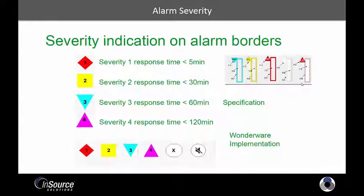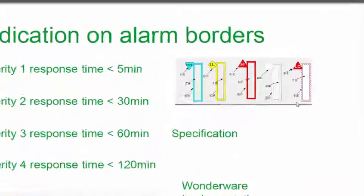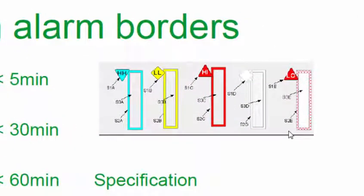One of the new features we have in the product is the ability to define alarm severities. We can then take the alarm severities and put a border around any graphical object to show that severity of alarm, giving an indication to the operator when looking at the screen that there's an alarm associated with that piece of equipment and what the alarm severity is.